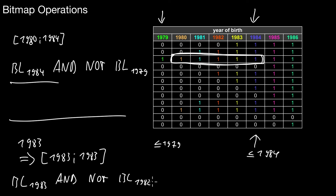The 1983 bitlist covers all values smaller or equal to 1983. The NOT of the 1982 bitlist then removes those smaller or equal to 1982. Walking through the rows: where the 1983 bit is one but the 1982 bit is also one, the entry is smaller or equal to 1982 so it's excluded. Where the 1983 bitlist is zero, it's already removed. In the end, only row IDs 0 and 5 qualify as results.